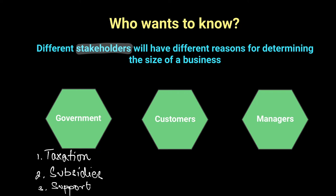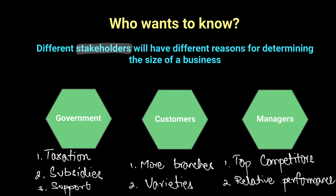Customers are another important stakeholder. They'd like to know which is the bigger business because a bigger business might mean more branches and more variety. Managers of a business would compare the size of different businesses to figure out who their top competition is — like Pepsi wanting to know how Coke is doing, and vice versa — always comparing their size to see who has the lead. So before even getting to the measures of business size, you first need to ask: who wants to know? Different stakeholders have different reasons for asking who is the bigger business.